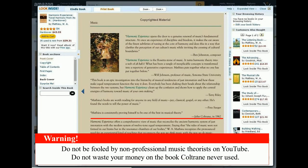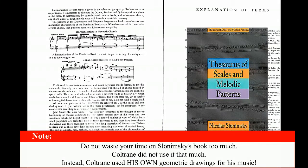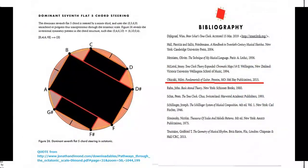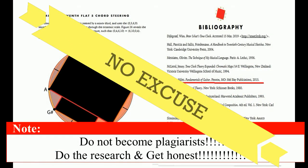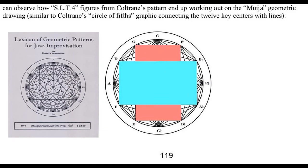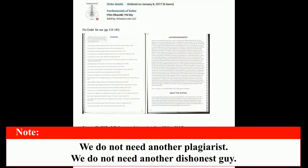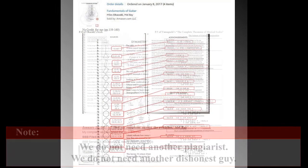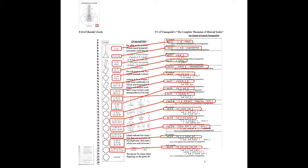I have to give you a warning. Do not be fooled by non-professional music sellers on YouTube. Do not waste your money on books Coltrane never used. Do not waste your time on Slonimsky's book too much — Coltrane did not use it that much. Instead, Coltrane used his own geometric drawings for his music. But there's a person giving credit to the plagiarist Miles Okazaki with no credit for me. You can easily find this in my book because Okazaki stole from me. We do not need another plagiarist or dishonest person. This comparing chart shows you how Okazaki stole from me, and there are many more examples.